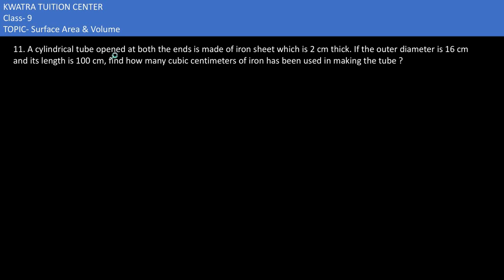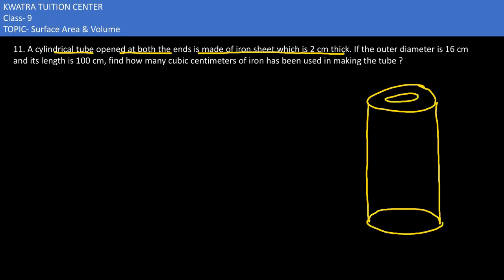In the 11th problem, we have a cylindrical tube that is open at both ends, made of iron sheet which is 2 centimeters thick. We have a pipe structure where the thickness is 2 centimeters.